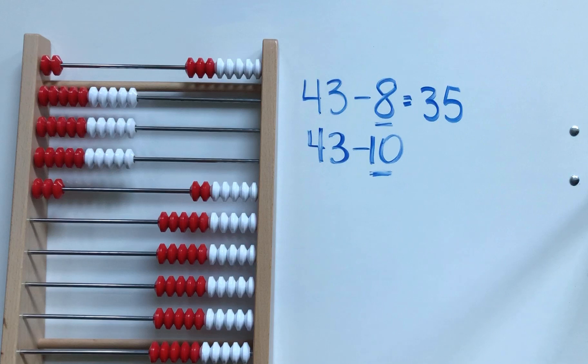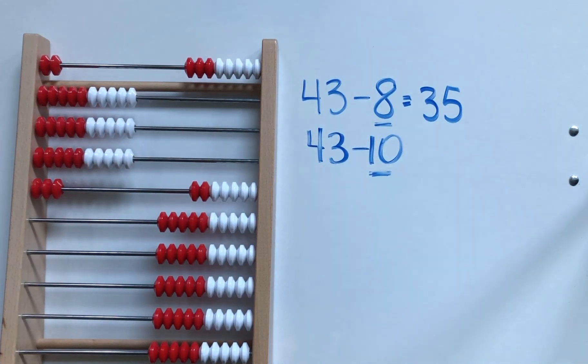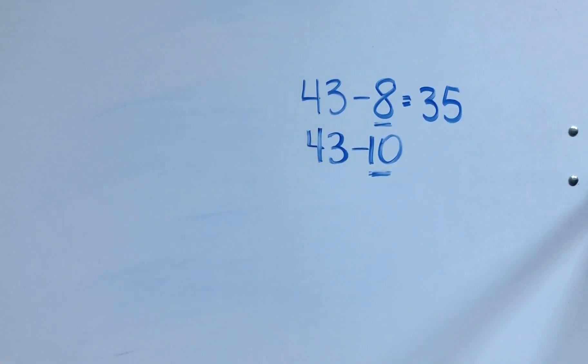Okay, so this is how we can make an adjustment to one of the numbers to make it easier to work with, and then we make up for that adjustment later on. We can also work with this strategy on a number line.